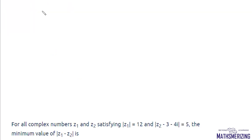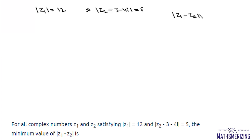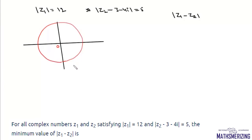Next question: Z1 is the set of all points where mod Z1 equals 12, and Z2 is the set where mod of Z2 minus (3 + 4i) equals 5. We need to find minimum and maximum values of mod(Z1 - Z2). Z1 lies on a circle with center at origin and radius 12 units. Z2 lies on a circle with center at 3 + 4i and radius 5 units.